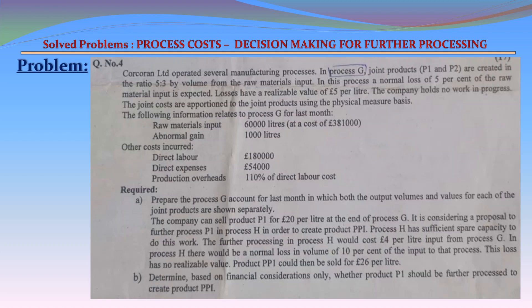Required: Prepare the Process G account for last month, in which both the output volumes and values for each of the joint products are shown separately. The company can sell product P1 for £20 per liter at the end of Process G. It is considering a proposal to further process P1 in Process H in order to create product PP1. Process H has sufficient spare capacity to do this work. The further processing in Process H would cost £4 per liter input from Process G. In Process H, there would be a normal loss in volume of 10% of the input to that process. This loss has no realizable value. Product PP1 could then be sold for £26 per liter. Determine, based on financial considerations only, whether product P1 should be further processed to create product PP1.